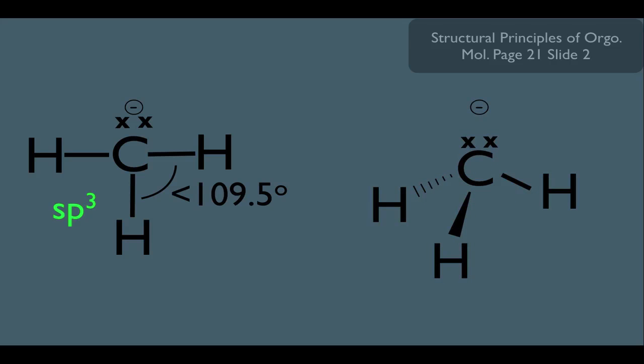The way we interpret this is the hydrogen on the left is going back behind the plane, the hydrogen in the middle is coming out at you, and the hydrogen on the right is in plane with the screen, which means that the lone pair of electrons must be placed in an sp3 hybridized orbital.